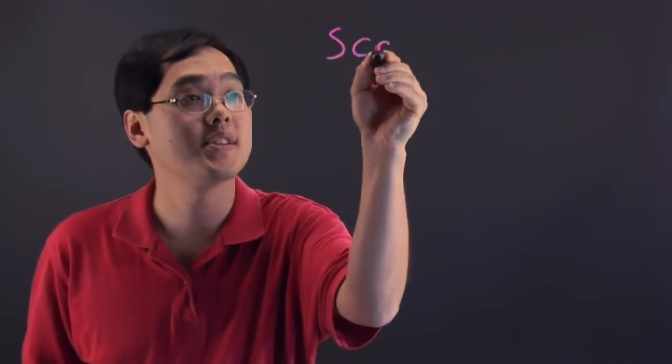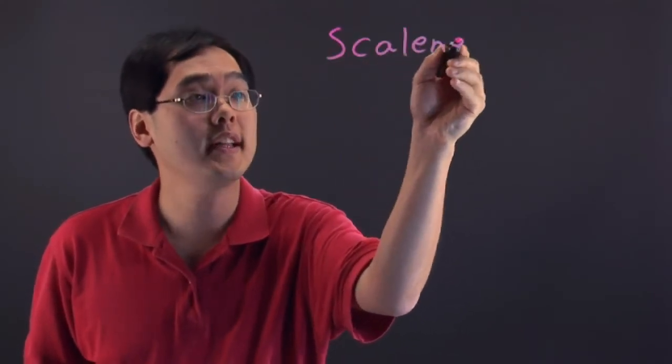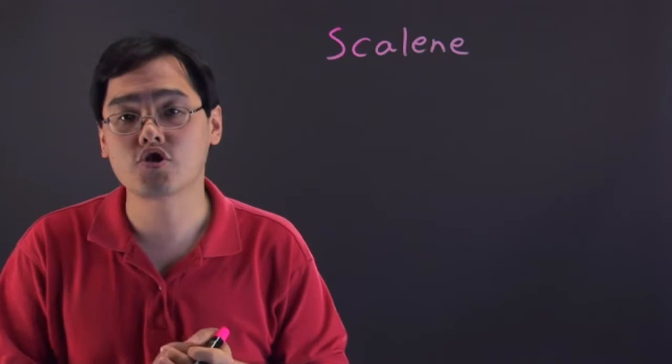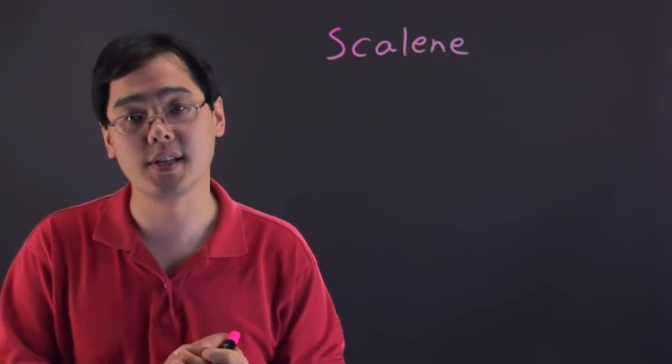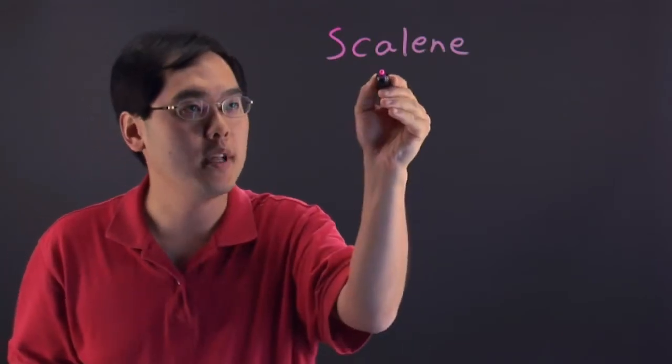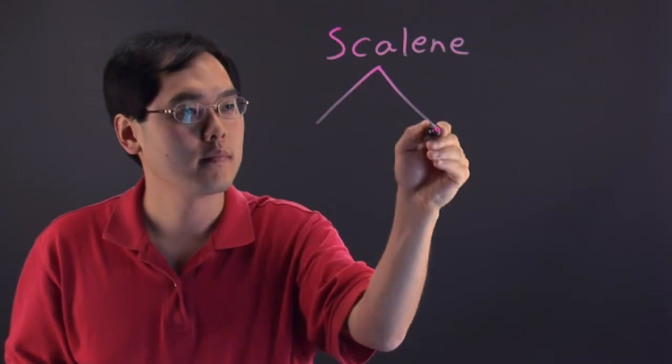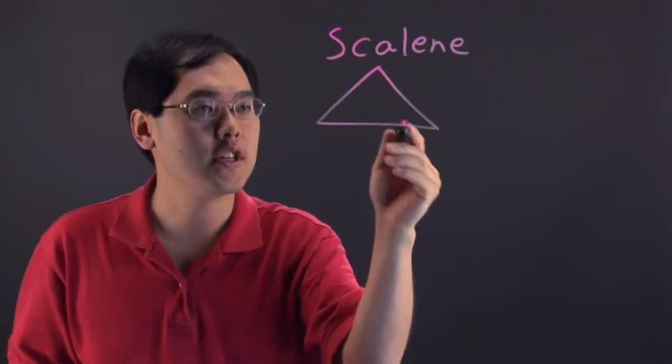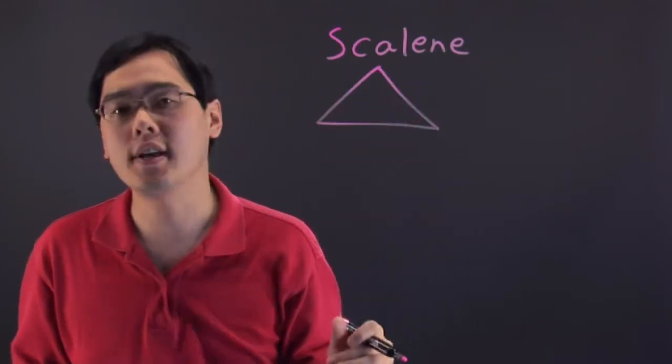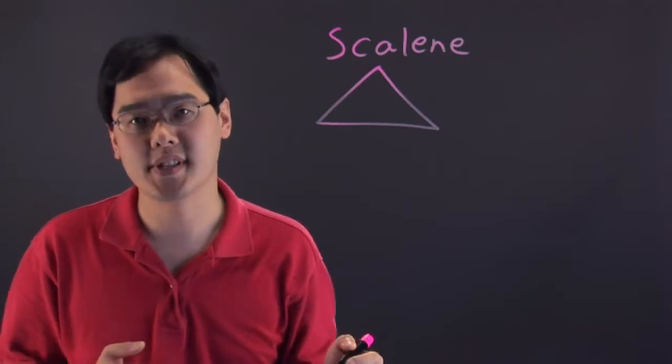The first we're going to talk about is that of a scalene triangle. Now in a scalene triangle all the angles in the triangle have to be less than 90 degrees. Now here's an example of one. As you can tell all the angles are drawn inward so that's an example of a scalene triangle.